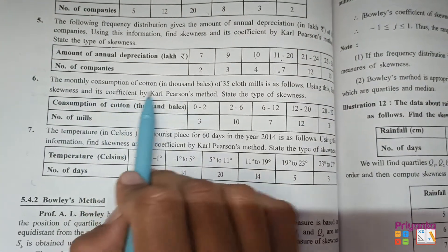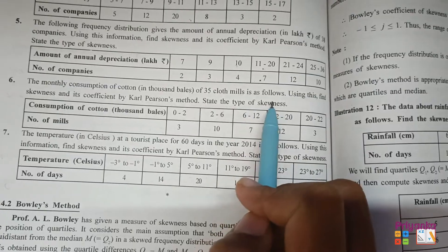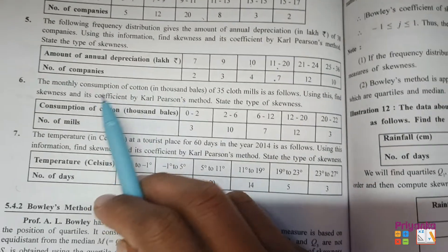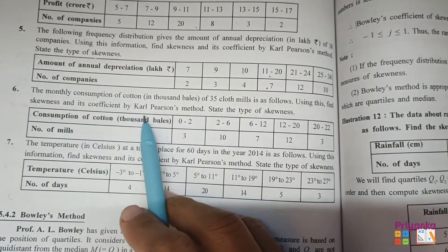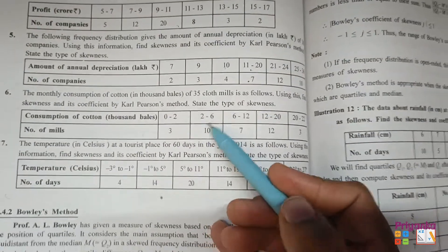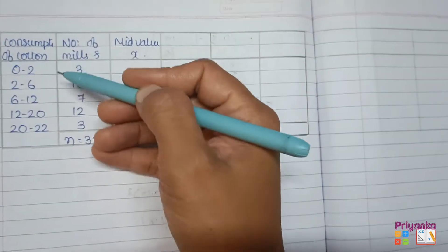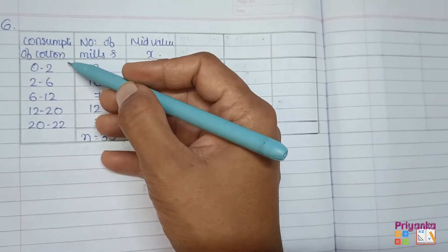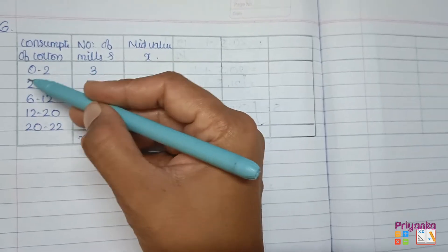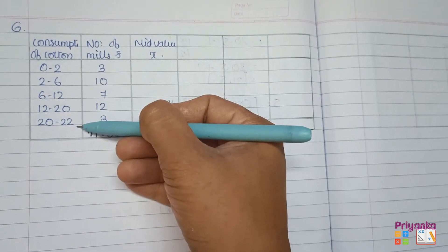Question number six: The monthly consumption of cotton in thousand bales of 35 cloths mills is as follows. Using this, find the skewness and its coefficient of Karl Pearson method and state the types of skewness. First of all, let's take all the information in the book. Now here we can see, look at the observation, they are not in equal distance.